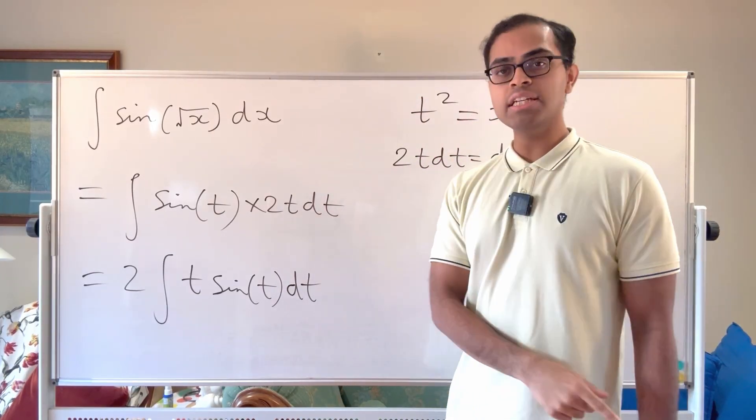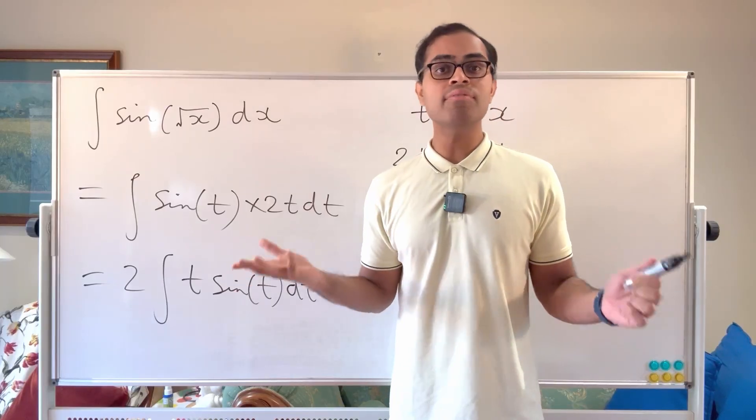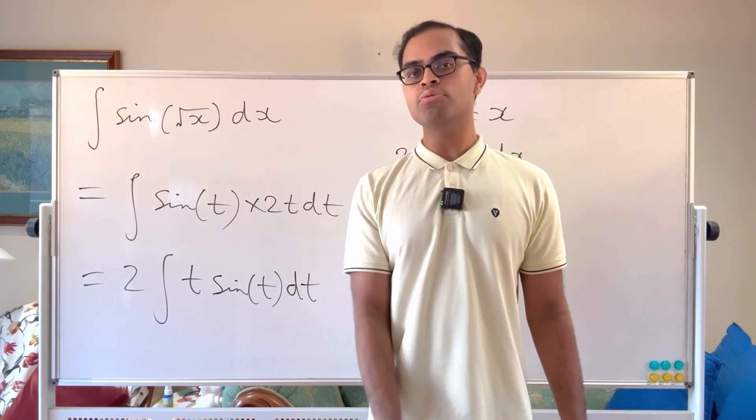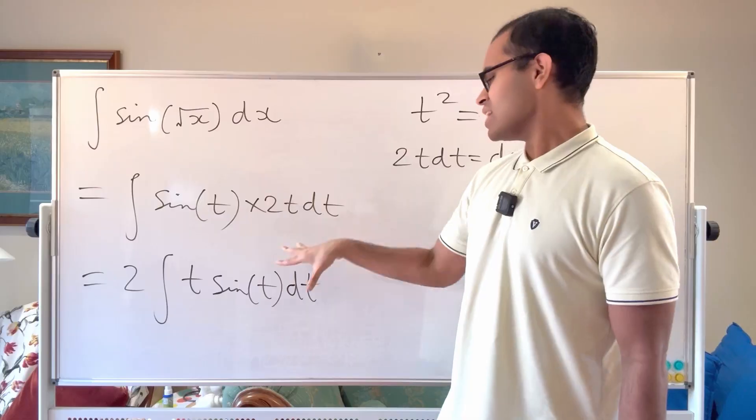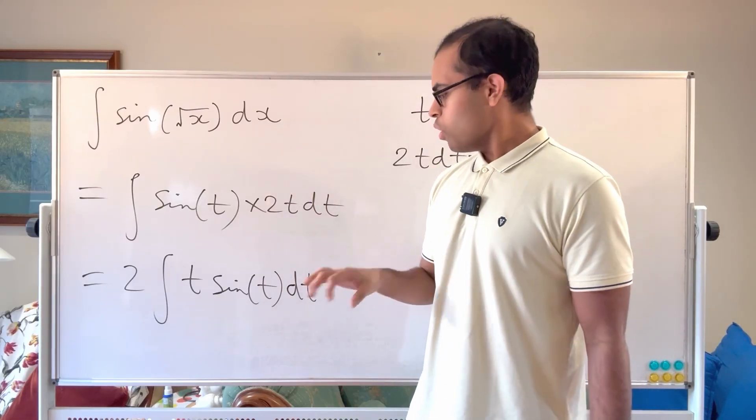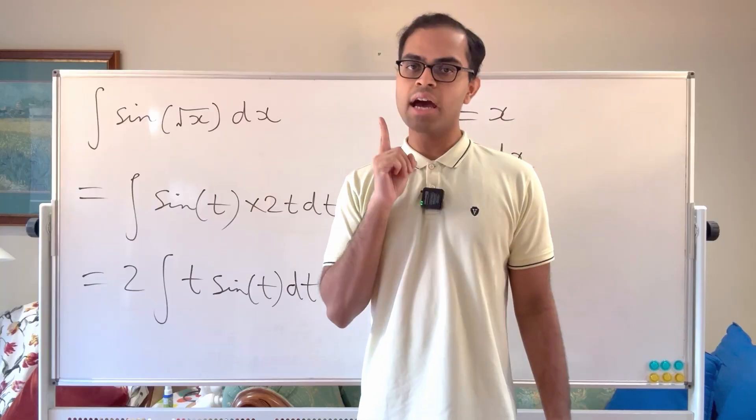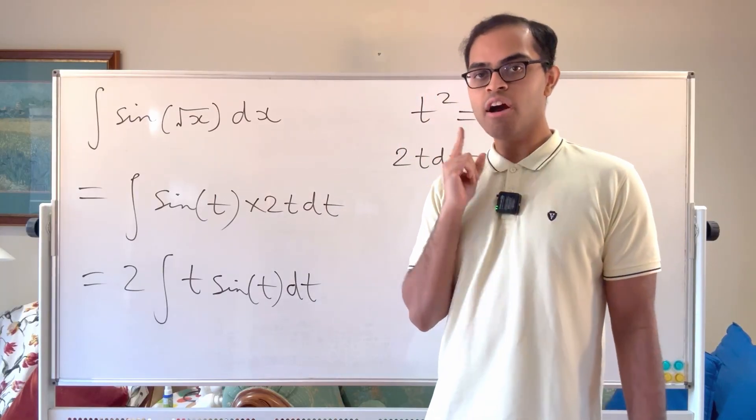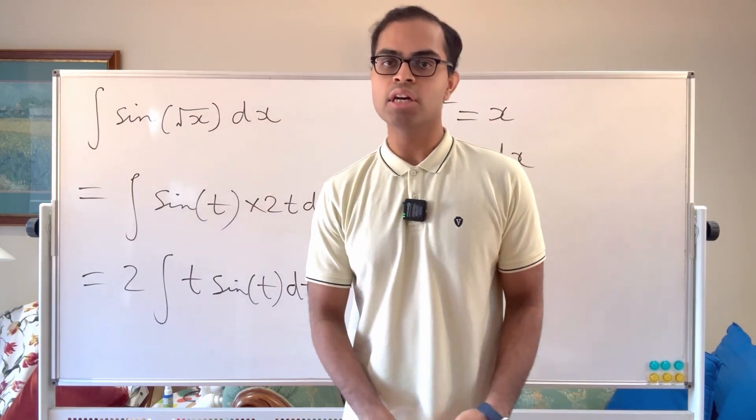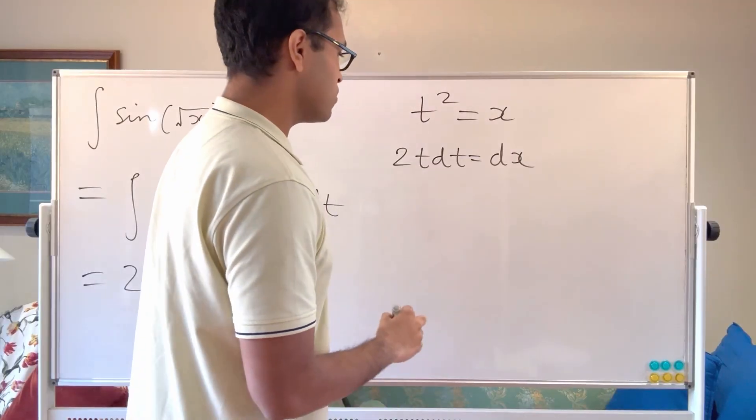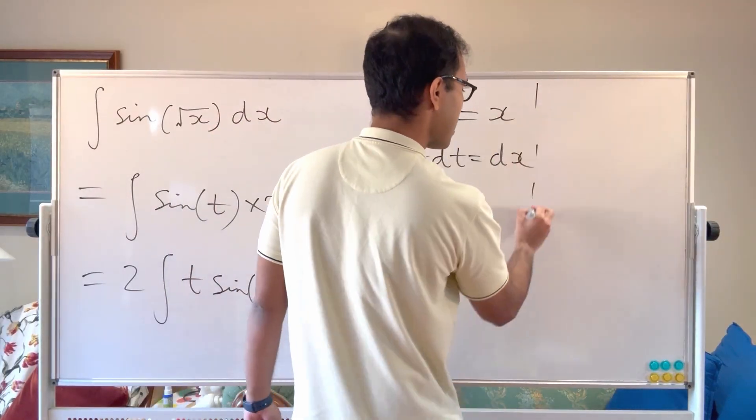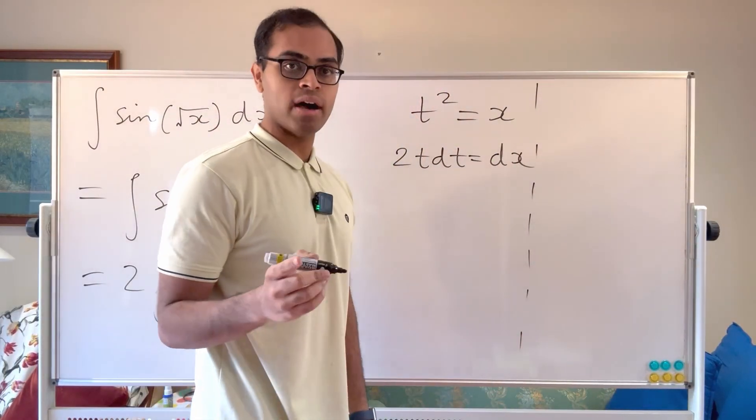So I've got the integral of t times sine of t dt. How do I even know to do integration by parts? I'll explain it in two steps. Number one is there isn't any obvious substitution. We see it's a product of two things and those two things are going to have to satisfy an important property for integration by parts to work out. And what that property is we're going to figure out by just quickly re-deriving or recalling how parts works.